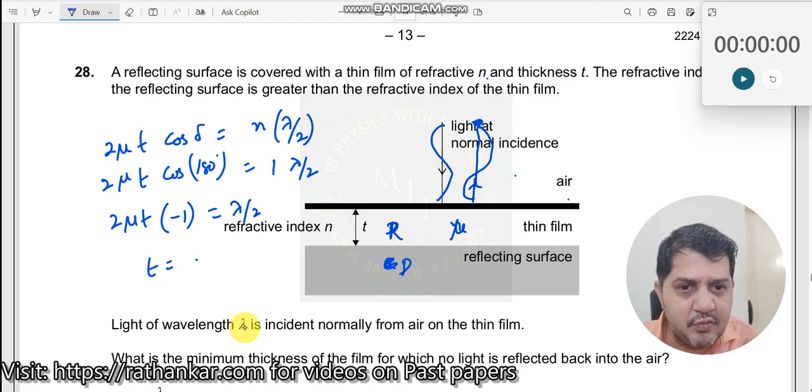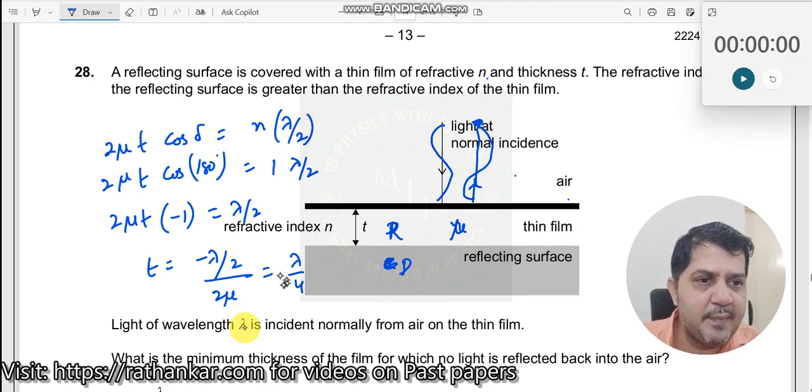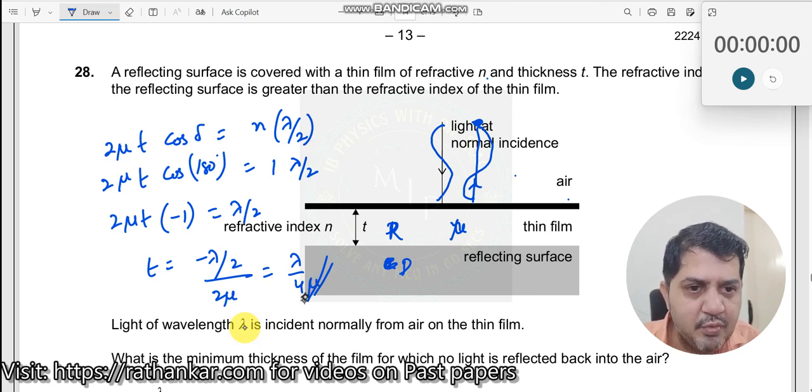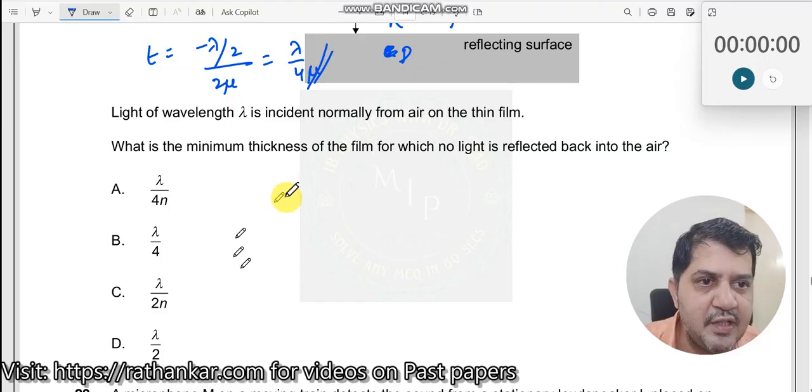So T should equal minus lambda divided by 2, divided by 2 mu, which equals minus lambda by 4 mu. Since thickness cannot be negative, it has to be positive, so I retain this as lambda by 4 mu. Mu is not seen in the options, so instead of mu they have taken n. It should be lambda by 4n. Answer is A.